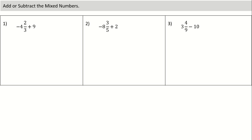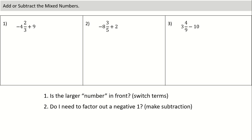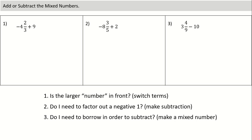Now let's look at what your worksheet looks like. On the first page, your questions are grouped by category, and on the back page they're mixed up. Let's bring up the three main questions you should ask yourself as a guide. Number one: is the larger number out in front, or do I need to switch terms? Number two: do I need to factor out a negative one to make my question subtraction? And number three: do I need to do any borrowing in order to subtract?